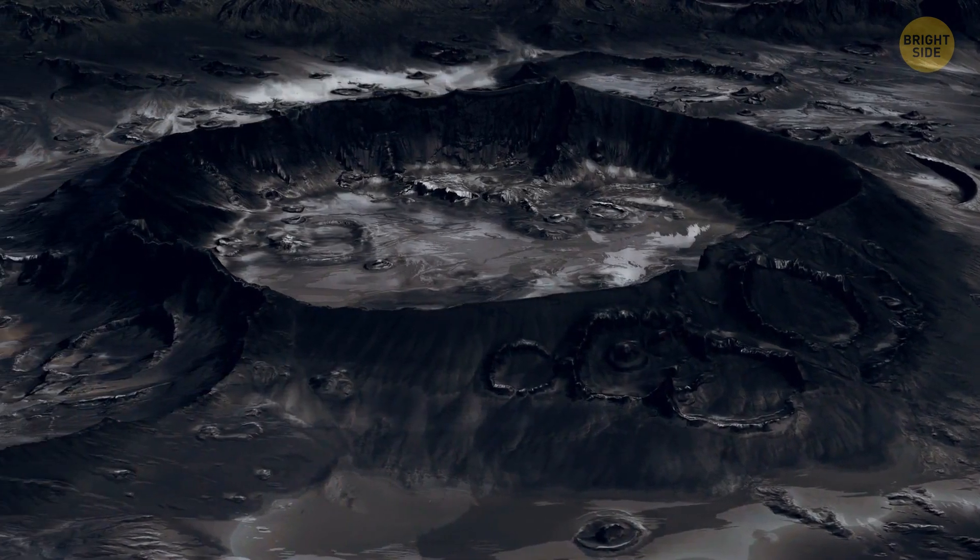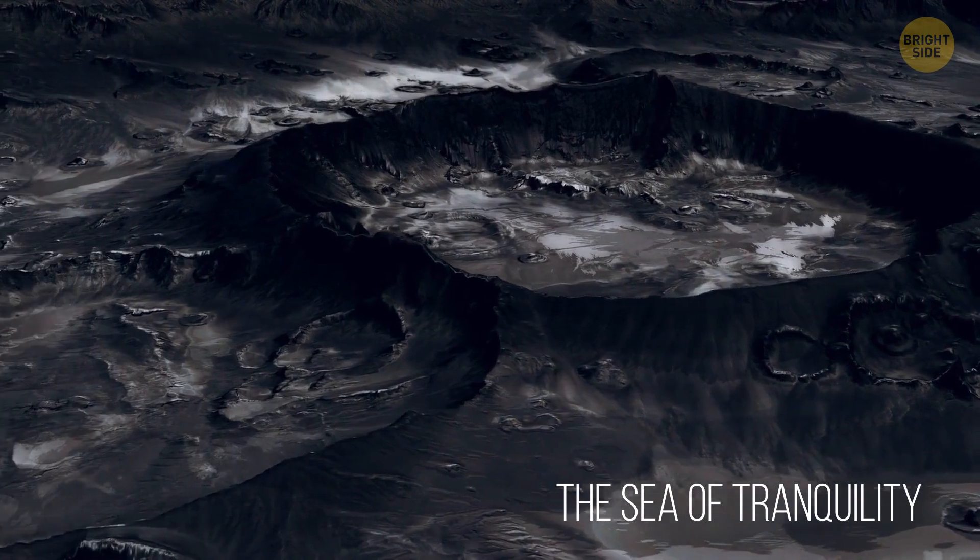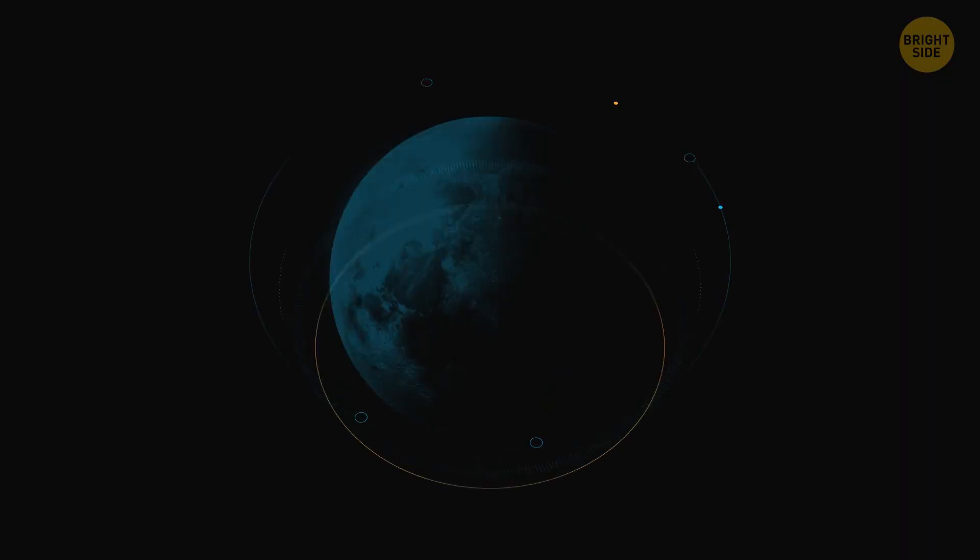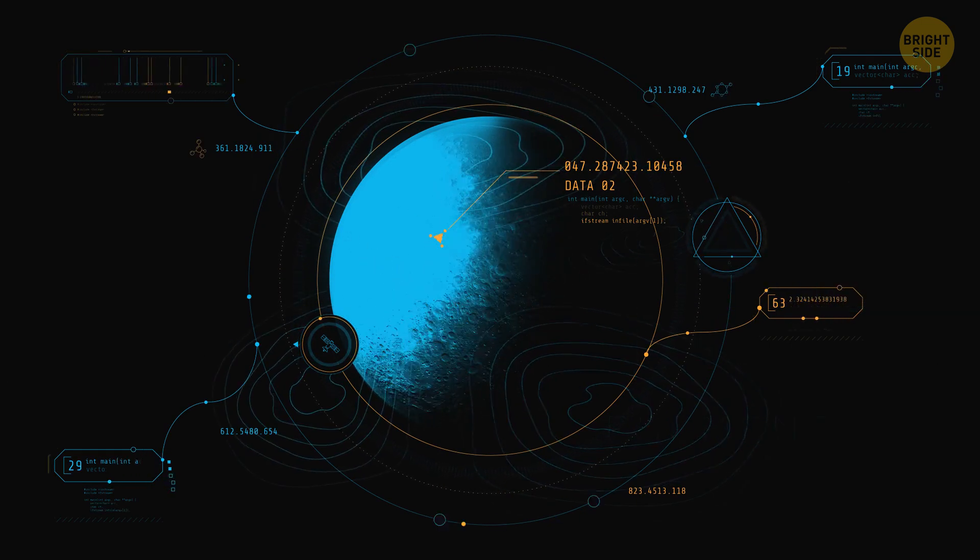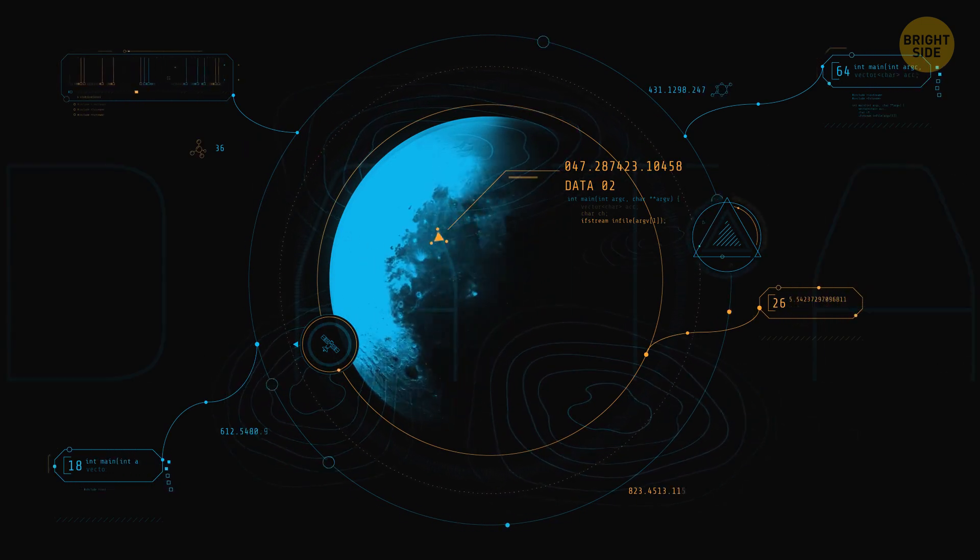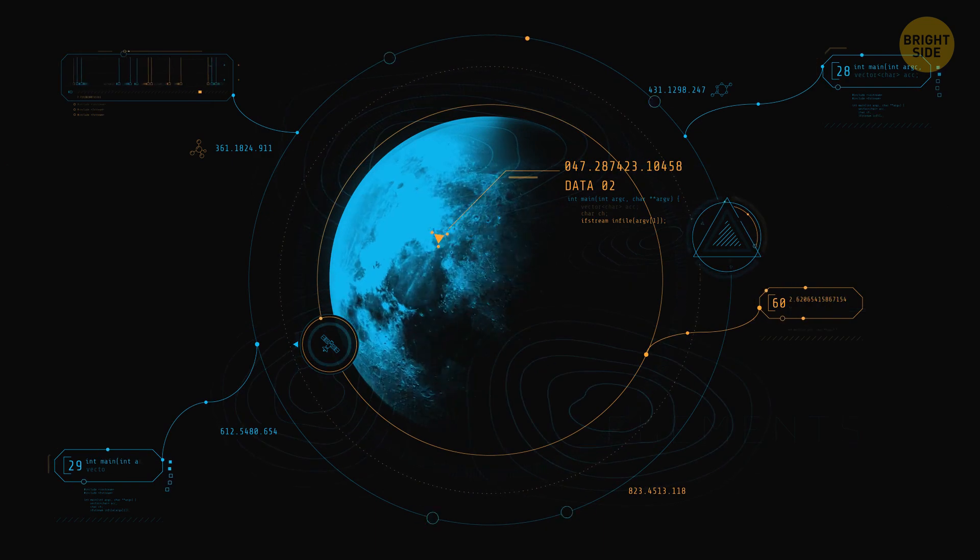They landed in an area called the Sea of Tranquility. This place was decided on after years of research because it had good visibility. It was relatively smooth and was easily reachable with as little propellant as possible.